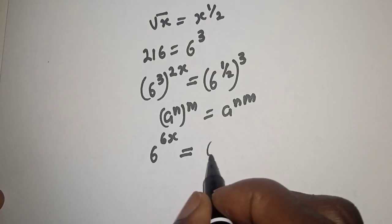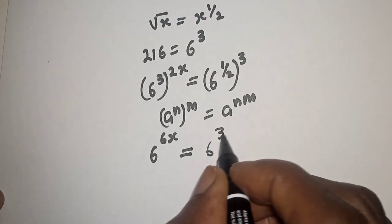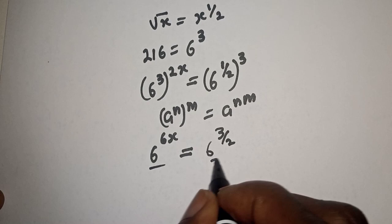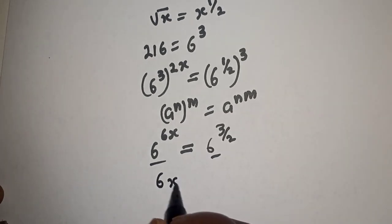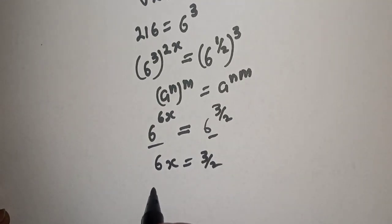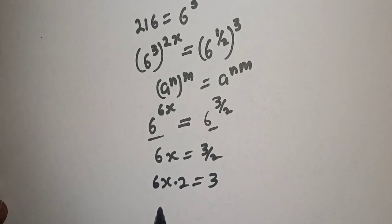Is equal to 6 raised to power 3 over 2. You have the same base, so 6x is equal to 3 over 2. If you cross multiply, we have 6x multiplied by 2 is equal to 3. 12x is equal to 3.